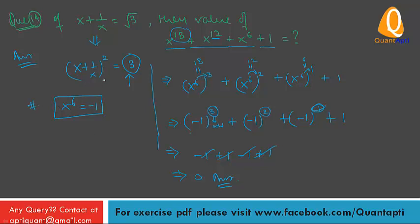You have to remember: if you have the term x plus 1 by x all squared, and the right hand side is always divisible by 3, then we can consider x raised to power 6 is equal to minus 1.